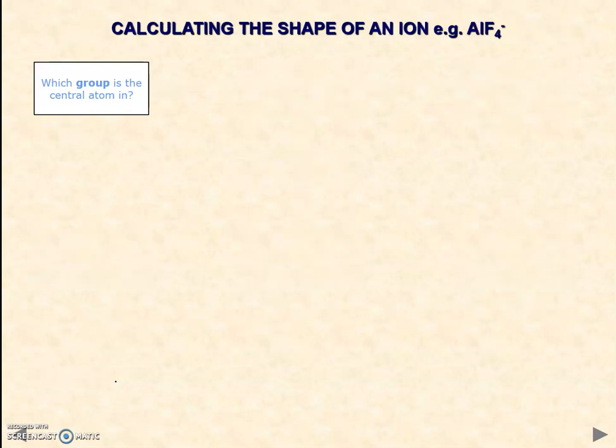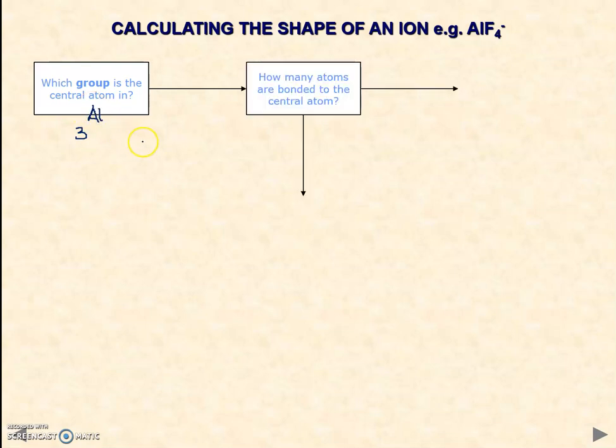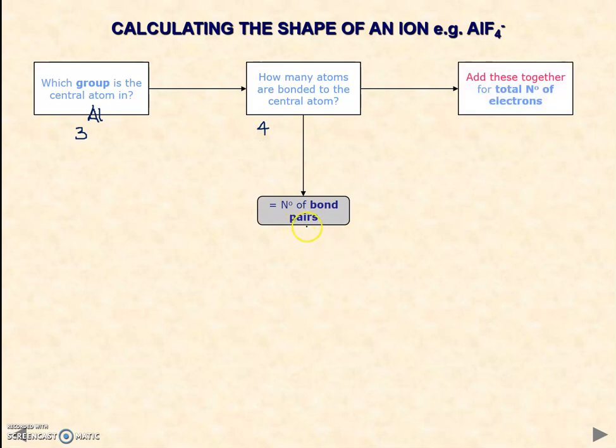However, if you've got an ion, then things are slightly more complicated. But we'll start as we did previously. Which group is the central atom in? It's aluminium, so it's in group three. How many atoms are bonded to the central atom? We've got four atoms bonded there, so that must mean we have four bond pairs of electrons.